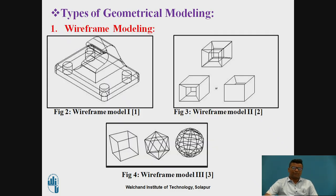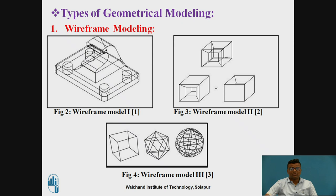The types of geometrical modeling: as we have discussed, there are three types — wireframe modeling, surface modeling, and solid modeling. First we will discuss wireframe modeling. These are some examples of wireframe modeling. Wireframe modeling is the least important geometrical modeling. For example, one application is toolpath simulation in CNC programming. The advantage is that it takes very less memory to save that particular wireframe model into the computer memory compared to surface and solid models.